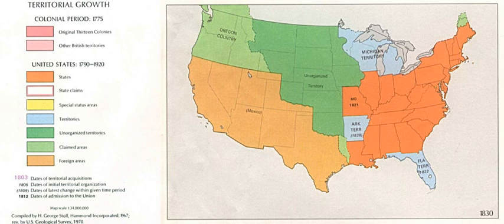Unorganized territories, as defined by the U.S. Census Bureau, occur in ten minor civil division states: Arkansas, Indiana, Iowa, Louisiana, Maine, Minnesota, North Carolina, North Dakota, Ohio, and South Dakota, where portions of counties are not included in any legally established MCD or independent incorporated place.